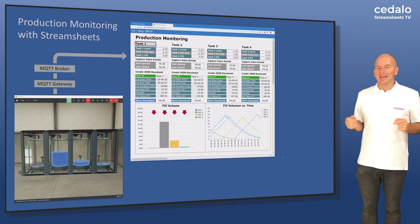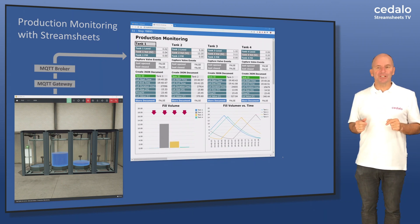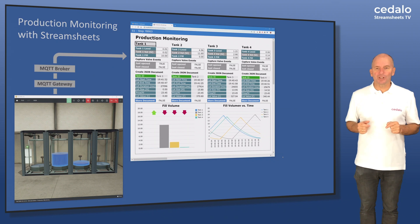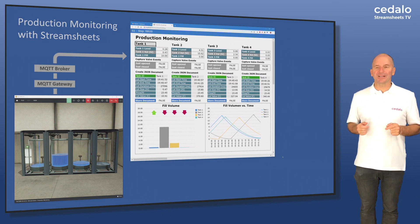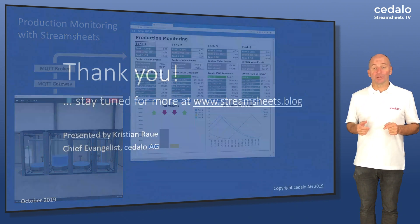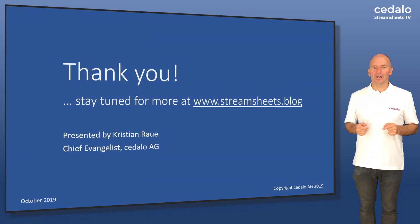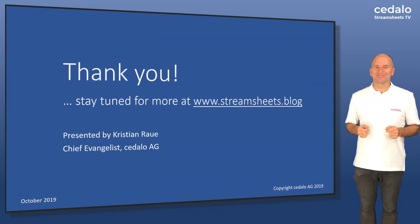That was it for today. In a future session I will show you how to use StreamSheets to get automatic MongoDB queries, like the total production value per hour, week, or similar. Thanks for your attention — see you soon.